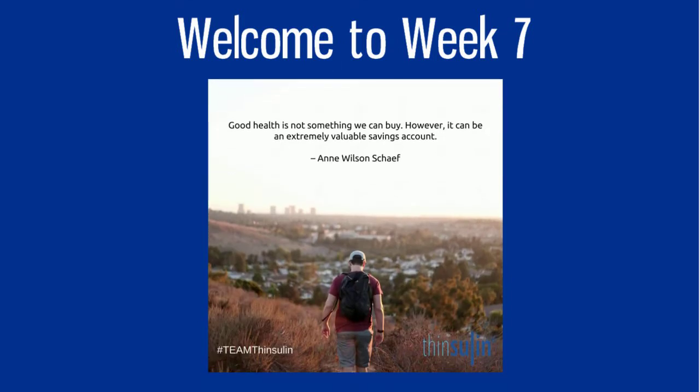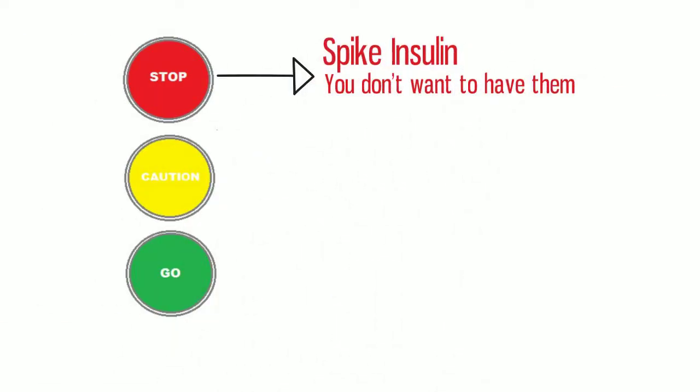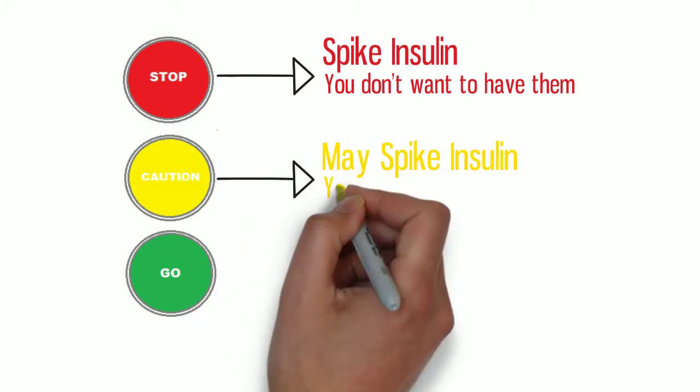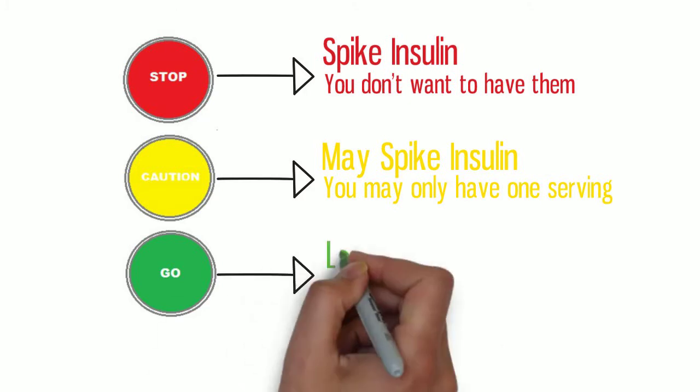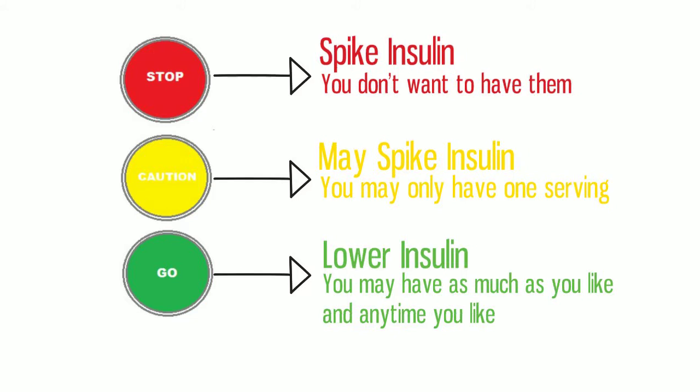Welcome to week 7 of the Thinsulin program. We hope you are now an expert on the Thinsulin traffic lights. Red light foods spike insulin so you don't want to have them, yellow light foods may spike insulin so you may only have one serving, and green light foods lower insulin so you may have as much as you like, anytime you like.